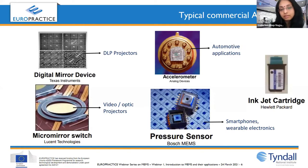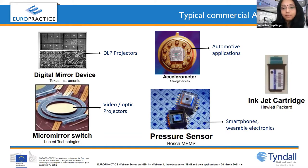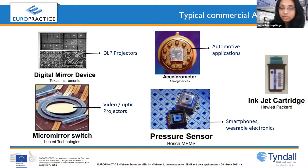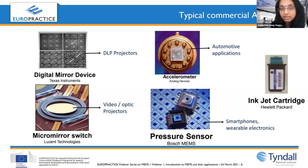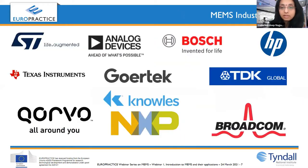Another industry leader is Bosch. We are all conscious about our health today — knowing our footsteps, pulse rate, calories burned. All these wearable electronics have MEMS sensors built in, and Bosch is a very big leader building sensors for smartphones and wearable electronics. One of the very early industry leaders was HP. They were among the first to bring out a commercial MEMS product: the inkjet printer, which I will explain in the next few slides.